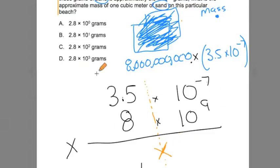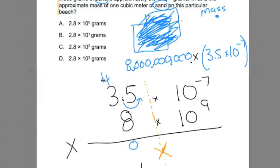Let's start by doing the first side. Do it with me: 3.5 times 8. I'll move the decimal to make it 35 times 8, then remember to move it back. 8 times 5 is 40 — drop the 0, carry the 4. 8 times 3 is 24, plus the 4 is 28. Since I moved the decimal over once to the right, I move it back once. So this side is 28.